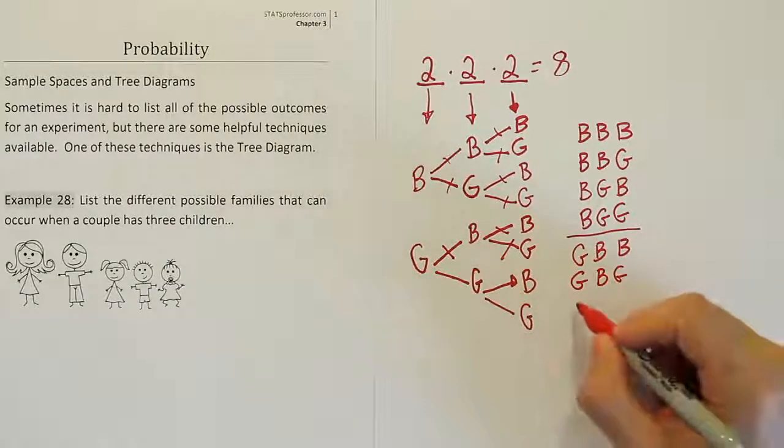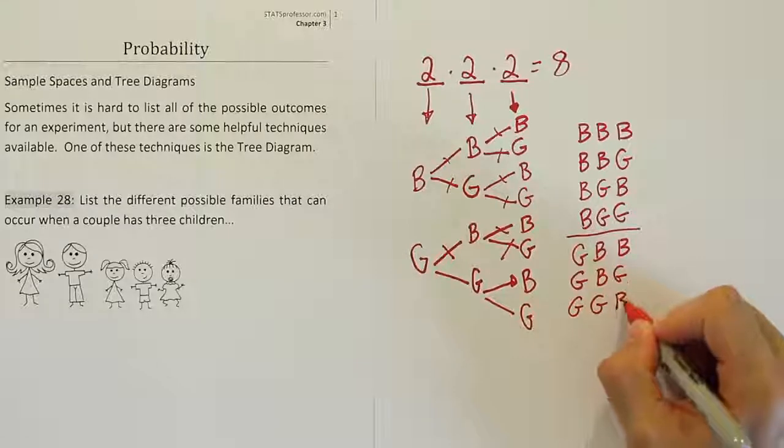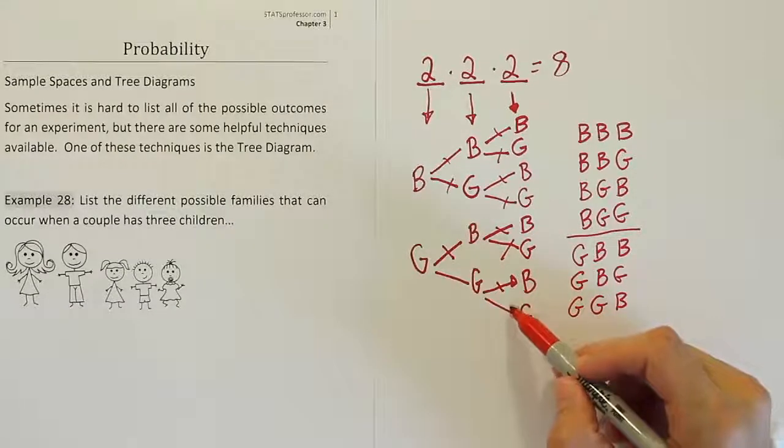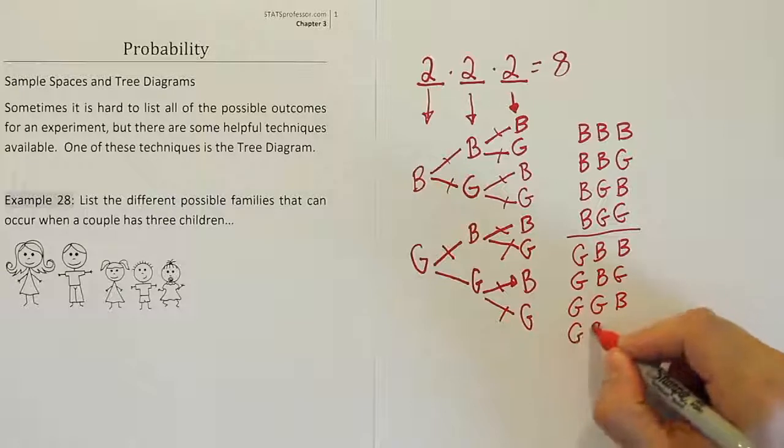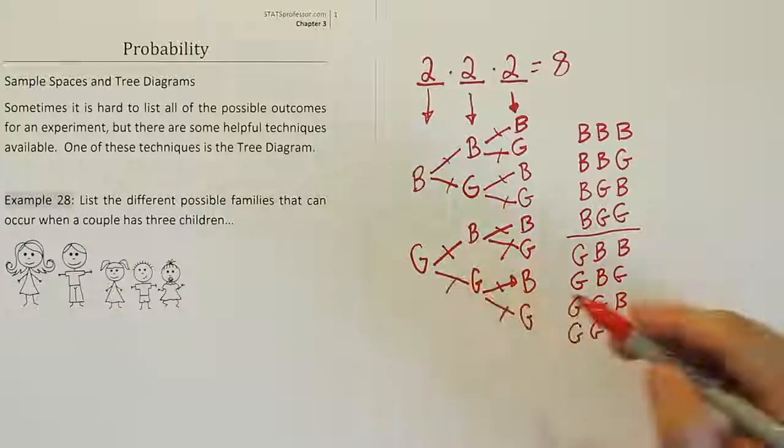Girl, girl, boy. Girl, girl, boy. We've used up that one. And then girl, girl, girl. Used up that one. Girl, girl, girl. And then we've used up the whole branch.